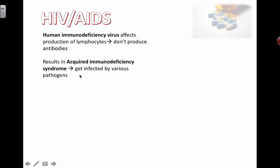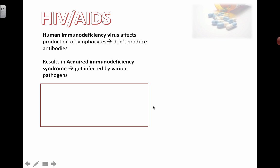In the extreme form, if HIV really destroys your available helper T cells and reduces your concentration of antibodies, you're going to end up with full-fledged acquired immunodeficiency syndrome, where things that normally wouldn't get you sick actually start getting you sick and it becomes a life-threatening issue.